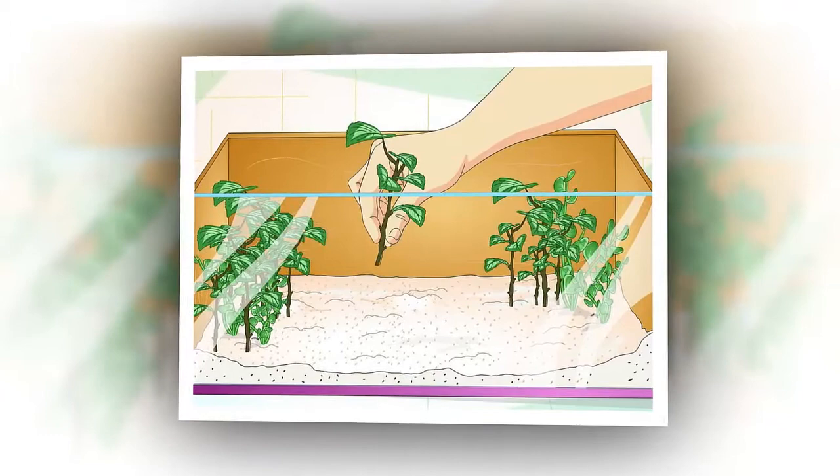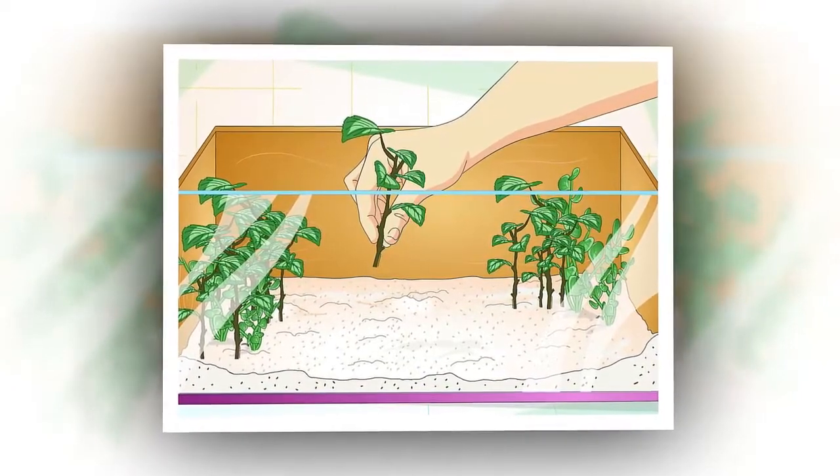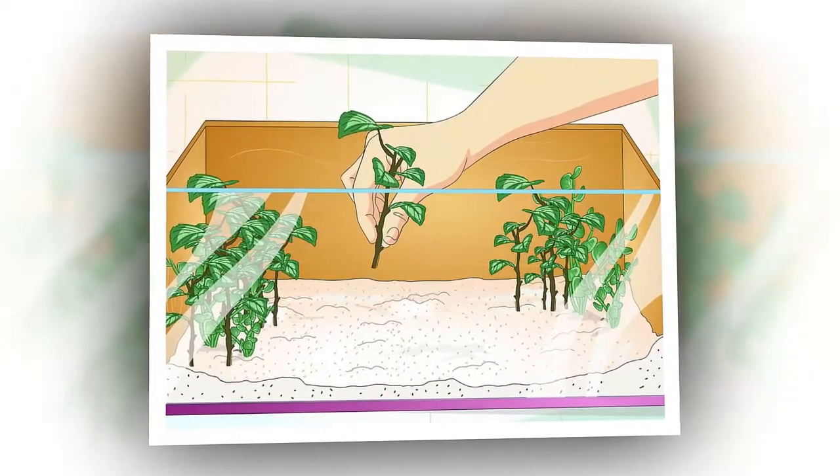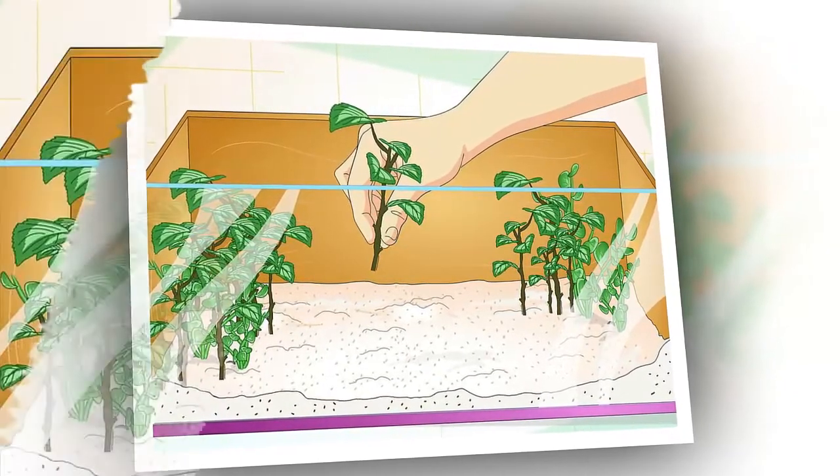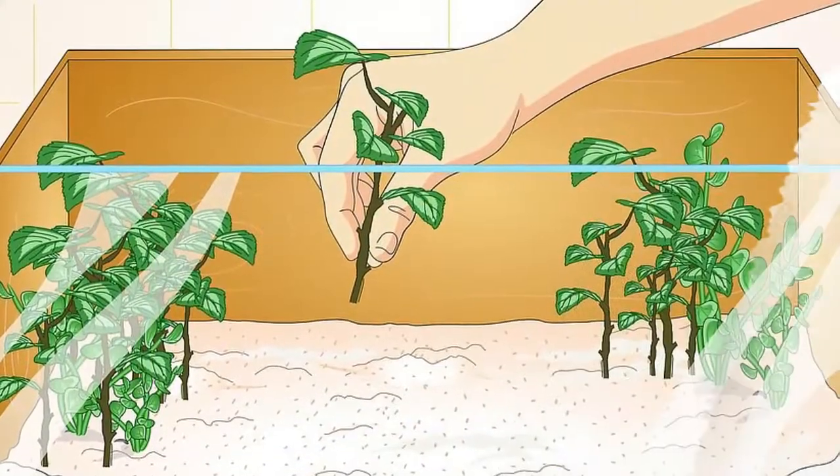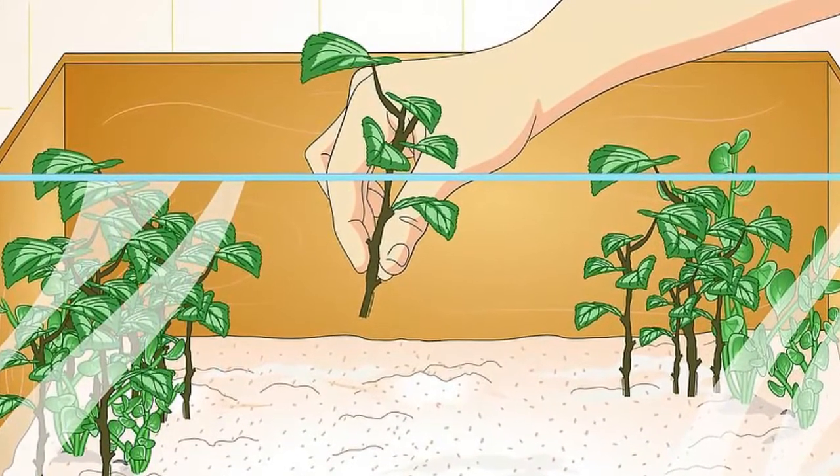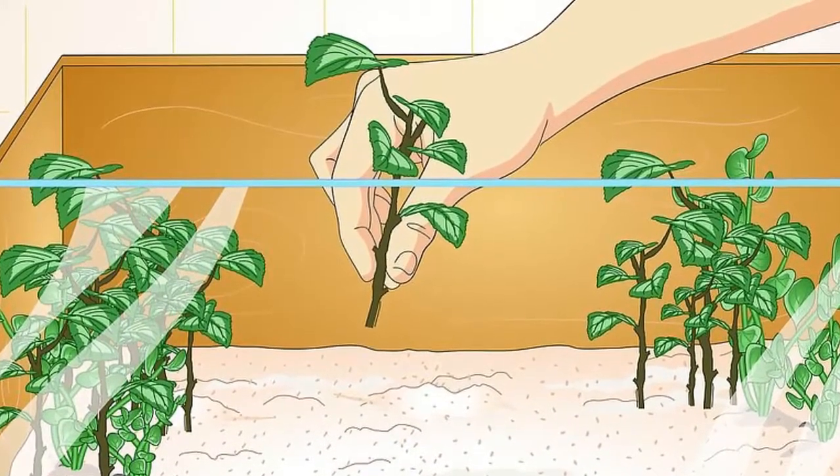Then place several potted plants in the tank. The plants give your lizard opportunities to climb as well as contributing to the humidity. Make sure you only include reptile-safe plants: pothos, spider plants, philodendrons, dracaena, and ficus are all good choices.